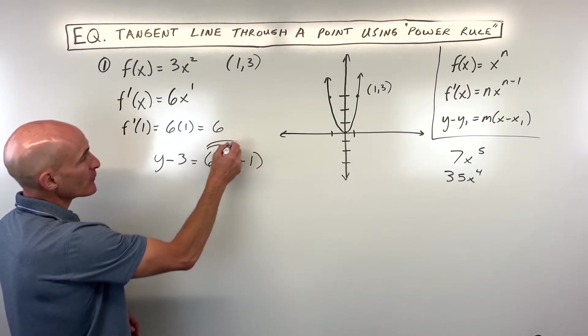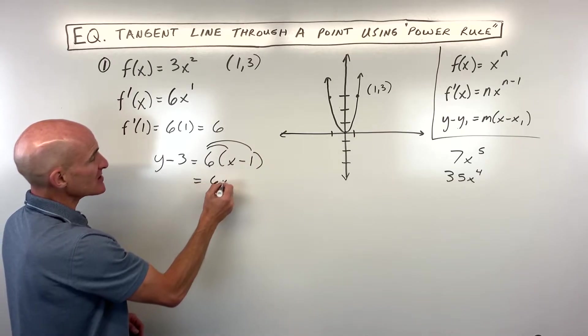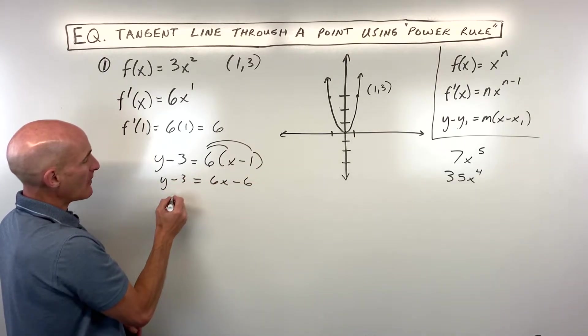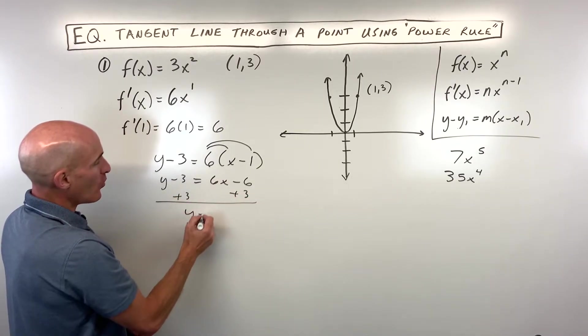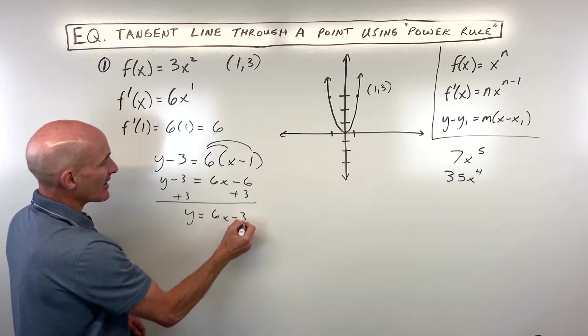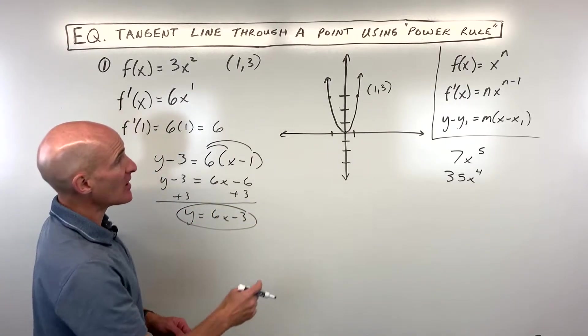Let's take it a little further by distributing. So this is 6x minus 6. And then we'll get the y by itself by adding 3 to both sides of the equation. So we get y equals 6x minus 3. That's the equation of our tangent line.